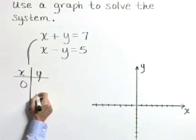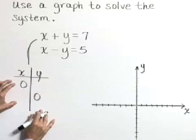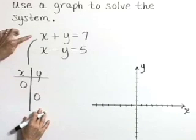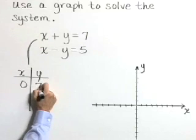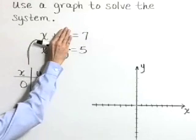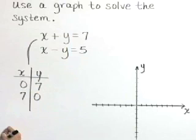And I want to plot intercepts. They're the quickest way to graph a line. In this equation, if we let X equal zero, then Y is equal to seven. If we let Y equal zero, then X is equal to seven.